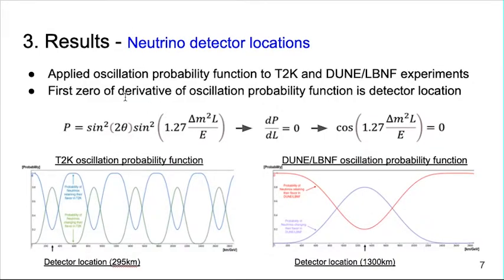First, the oscillation probability function was applied to the two experiments to calculate the detector position. Since the accelerator energy is low in case of T2K, it shows an oscillation function with a short period whereas DUNE/LBNF has a relatively longer period.